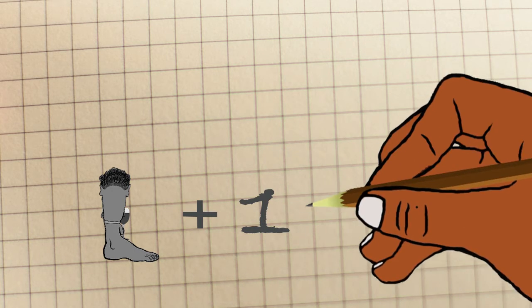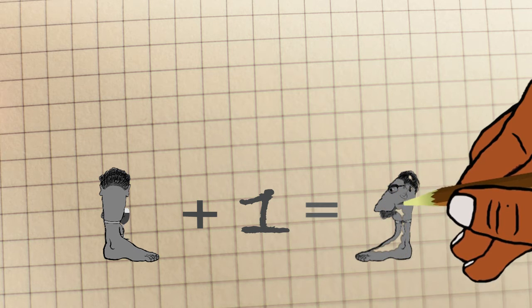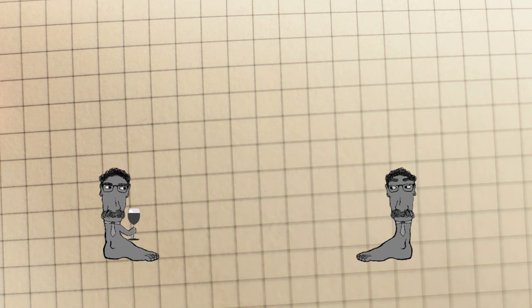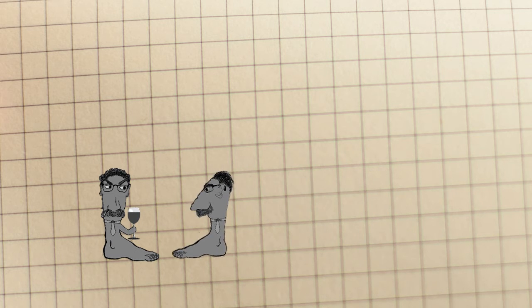For example, one represents unity and is the originator of all numbers, but two represents opinion. It takes two to have an opinion and get into a fight.